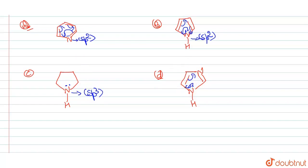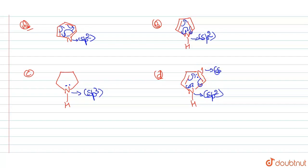In option D, one nitrogen has its lone pair in resonance with the pi bond — sigma, pi, sigma, pi — but there is another nitrogen whose lone pair is not in resonance with any other species. So D has one sp2 nitrogen and one sp2 nitrogen with a localized lone pair.